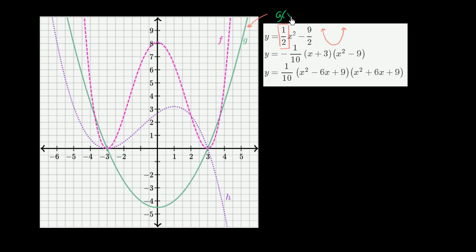So g of x is equal to 1 half x squared minus 9 halves. Another giveaway is the y-intercept: when x equals 0, y equals negative 9 halves, which is negative 4 and a half. And we can see that is indeed the case for g — when x is 0, y is negative 4 and a half. So we can feel pretty confident about that.